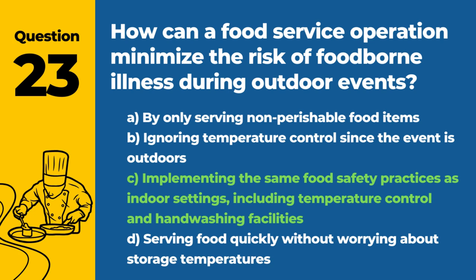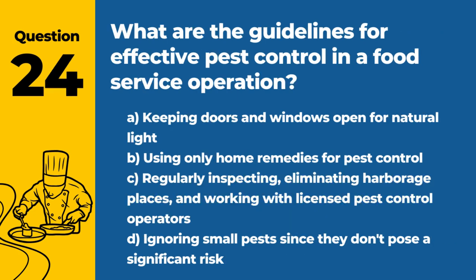Question 24. What are the guidelines for effective pest control in a food service operation? The answer is C: Regularly inspecting, eliminating harborage places, and working with licensed pest control operators. Effective pest management is critical for maintaining a safe food service environment.